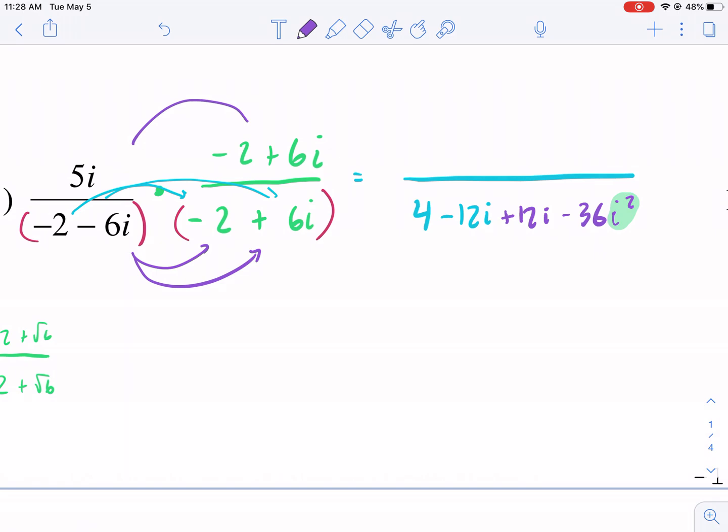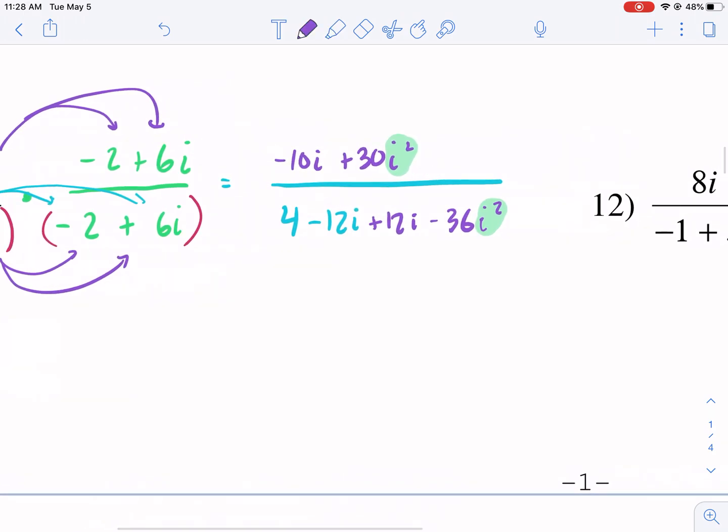Meanwhile, we're going to distribute the 5i times the negative 2 and the 6i. So we have negative 10i. And then we have positive 30i squared. i squared, a little alarm. Keep that in mind. Let's simplify from here. So we have negative 10i plus 30 times a negative 1.